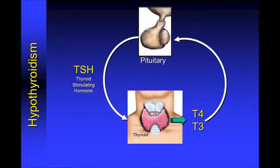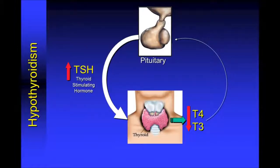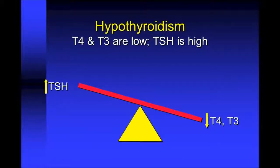Now let's consider hypothyroidism. In this situation, there is a decrease in the production of thyroid hormone by the thyroid gland. That decrease in production is perceived by the pituitary, which responds by increasing the amount of TSH it produces in an attempt to drive the thyroid to produce more hormone. Returning to our teeter-totter analogy, as the T4 and T3 levels decline, the TSH side of the teeter-totter will rise. When your doctor screens you for a thyroid condition, they may comment that the gland is underactive because of an elevation of the TSH.